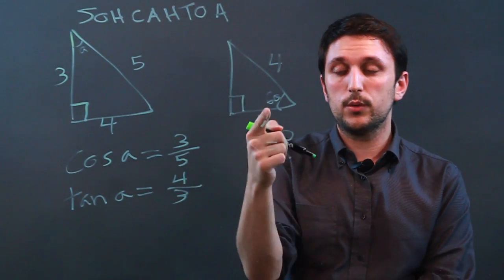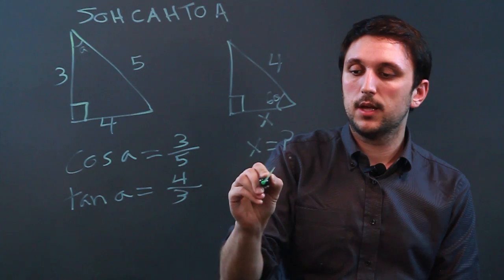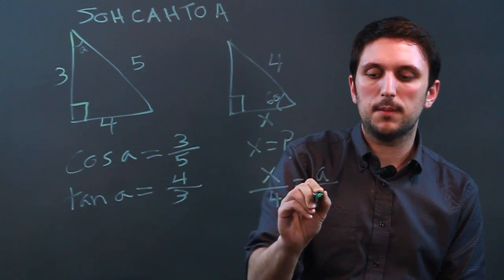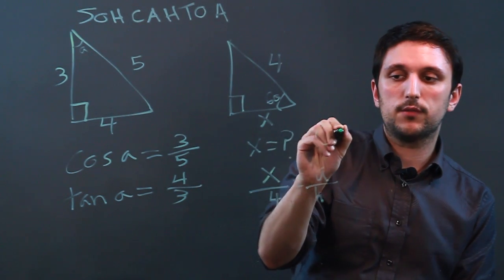Well, what we can do is we know that X is adjacent and 4 is the hypotenuse. So we say, okay, X over 4 equals adjacent over hypotenuse, which would be cosine. So we can take the cosine of 60.